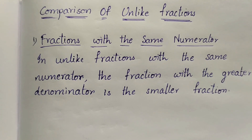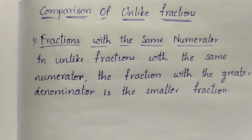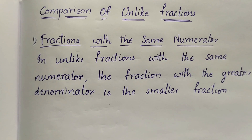Hi everyone. In this video we are going to learn about comparison of unlike fractions. Unlike fractions means fractions with different denominators. For example, 1 by 2 and 1 by 3 — 2 and 3 are the denominators, they are different. Such type of fractions are called unlike fractions. Now we have to compare such type of unlike fractions.